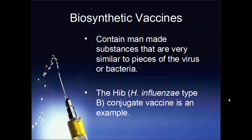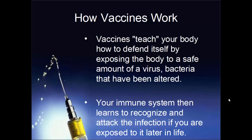The last class, biosynthetic or conjugate vaccines, contain a man-made substance very similar to the actual bacterium or virus. Typically, a very small protein is wrapped in a sugar-based substance so your body can recognize it as that bacterium or virus. A common example is the Hib vaccine — Haemophilus influenzae type B.